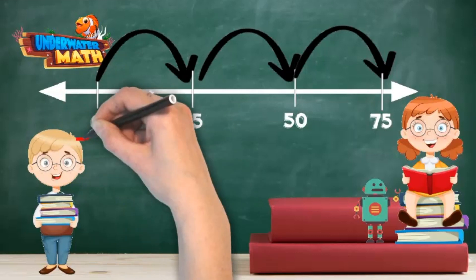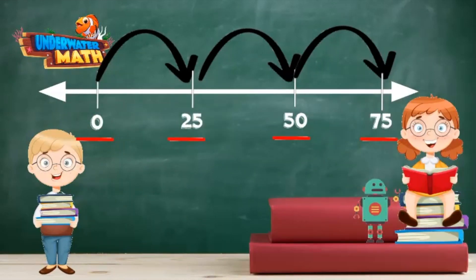Wow Colin, did you notice that the numbers only end in zero or five? That's right, Carla. When we skip count by 25 and start at a multiple of 25, our new numbers always end in zero or five. Let's